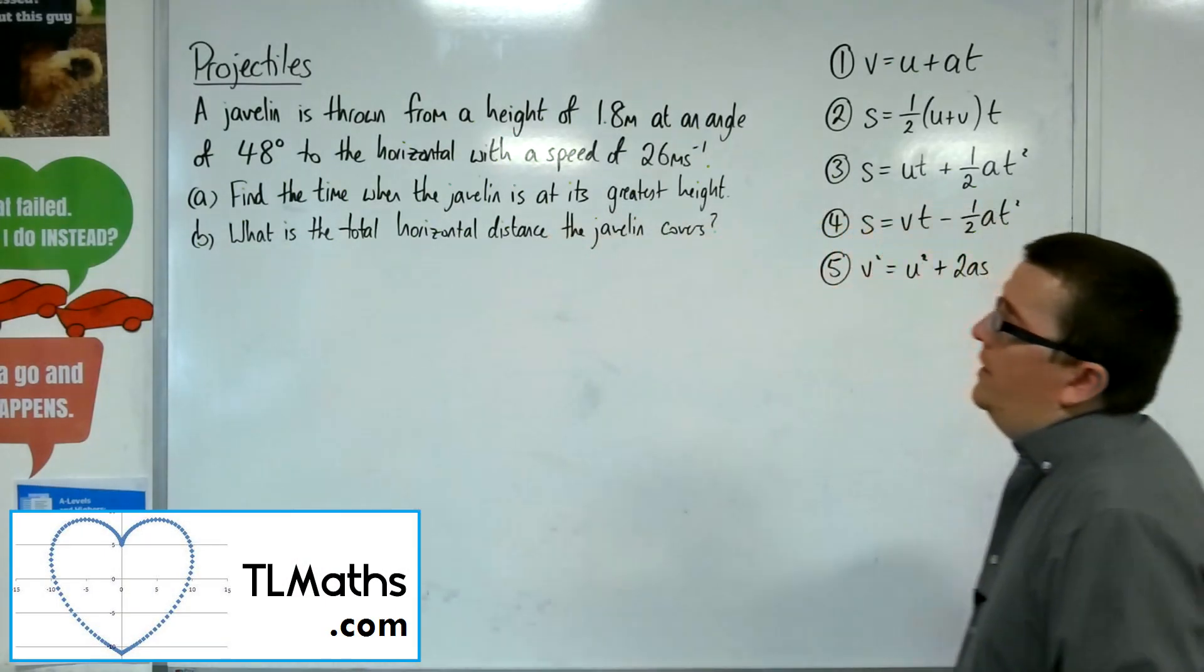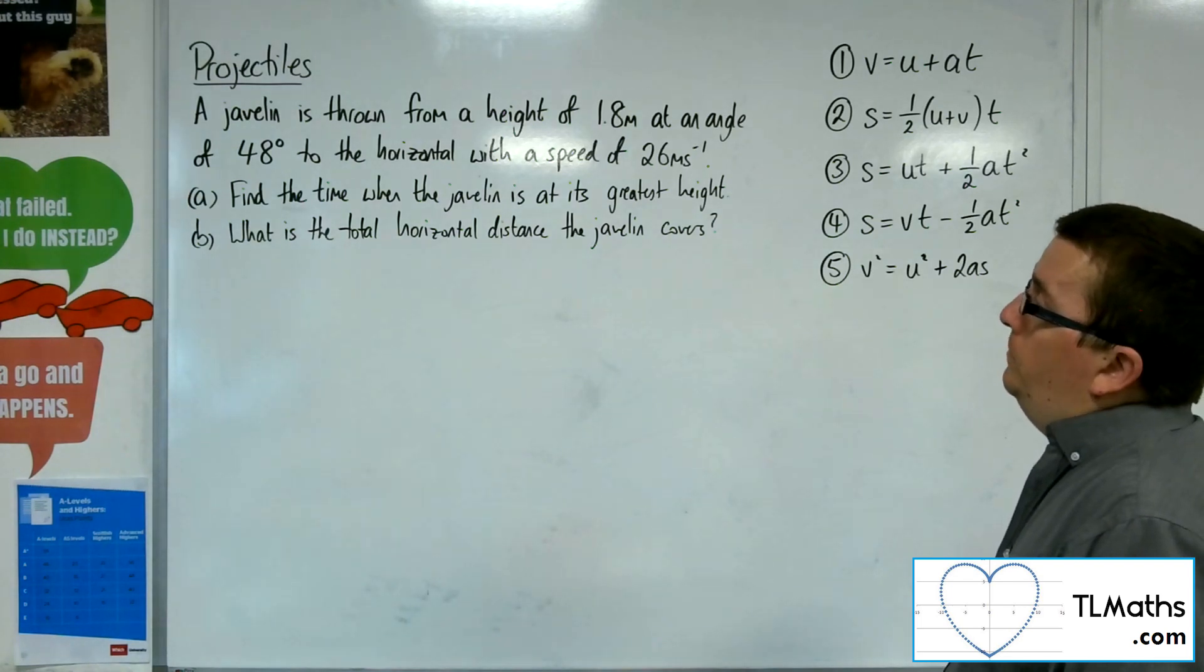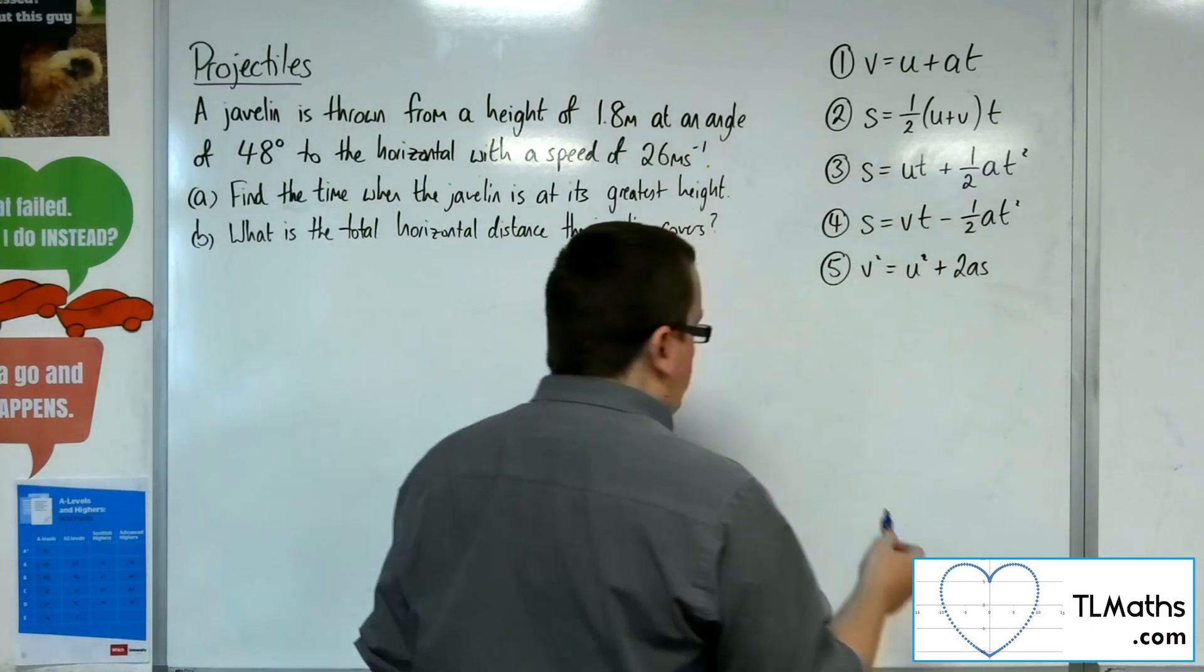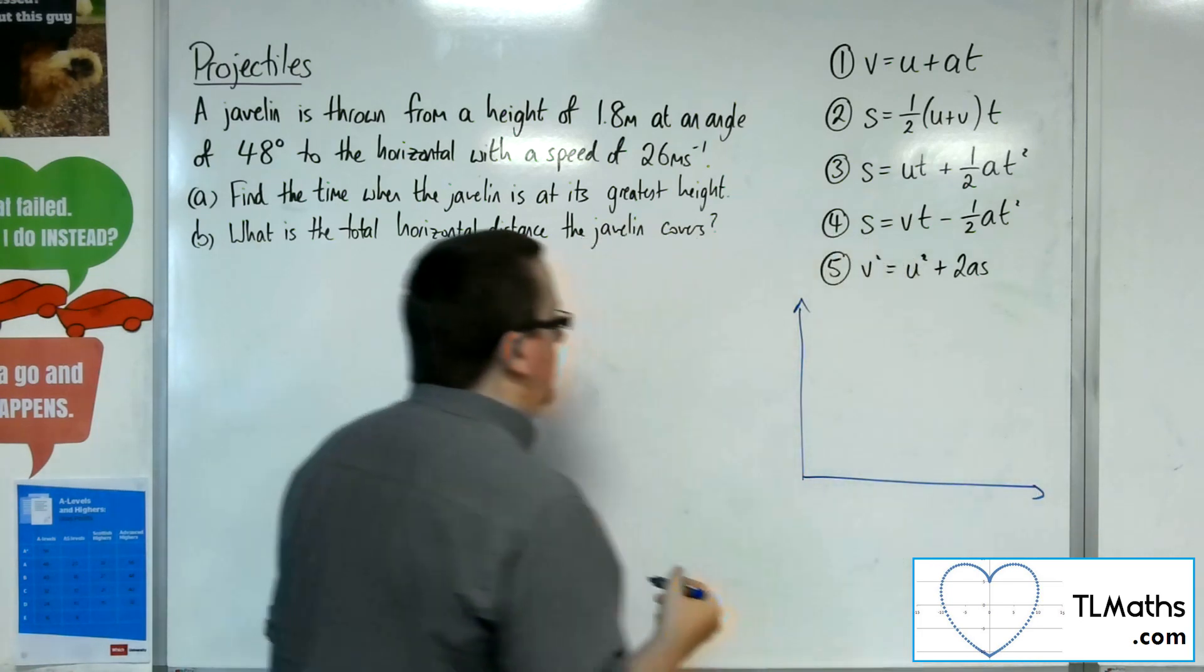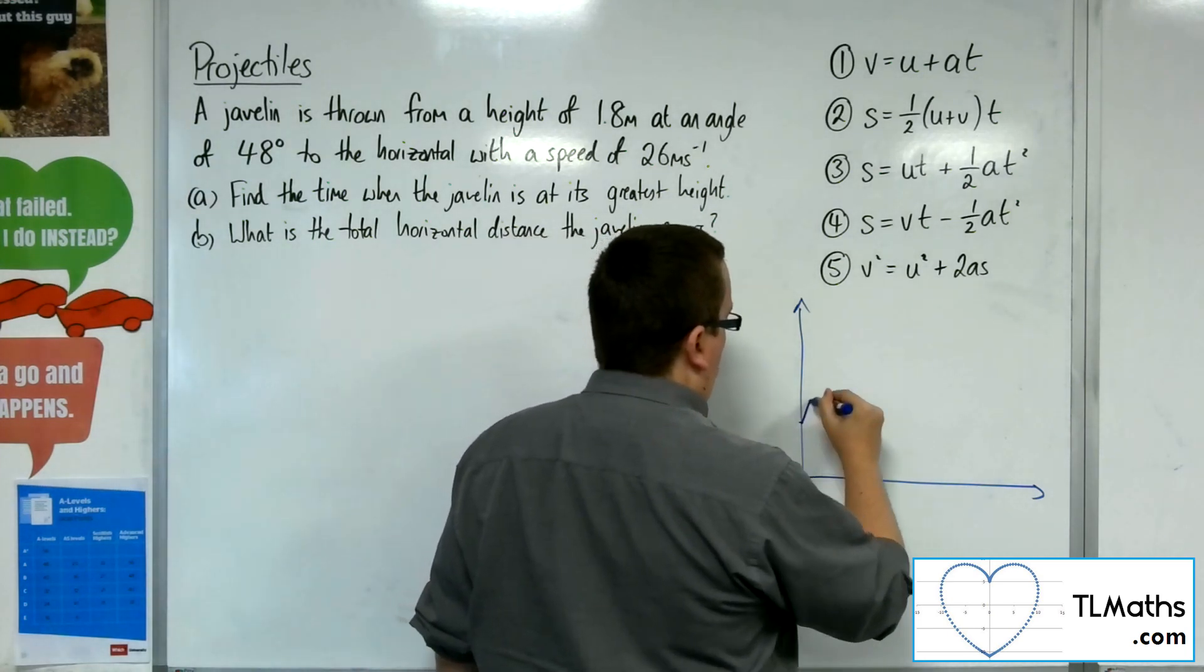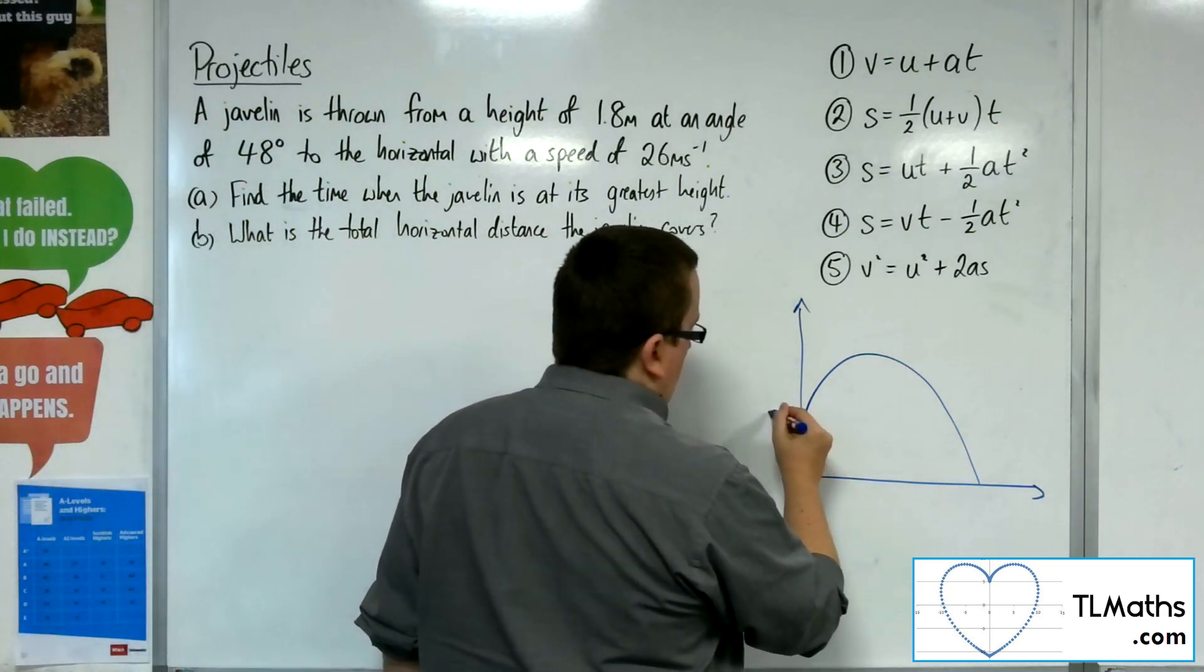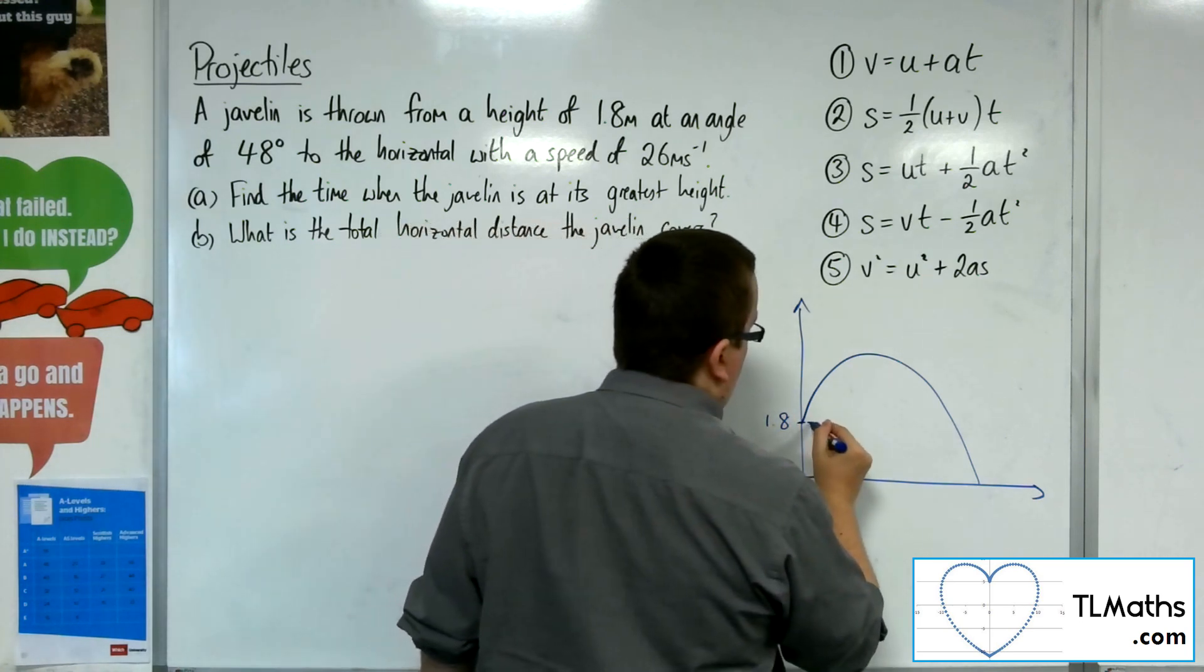In this video, we have a javelin that's thrown from a height of 1.8 metres at an angle of 48 degrees to the horizontal with a speed of 26 metres per second. We first of all need to find the time when the javelin is at its greatest height. So let's draw a little diagram so that we can visualise what's going on here. The javelin is thrown from a height of 1.8 metres and it will have this kind of shape of trajectory where this is 1.8, and we've got an angle of 48 degrees.